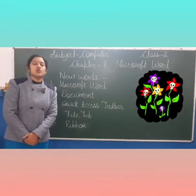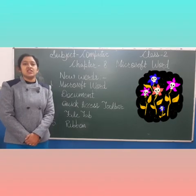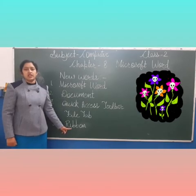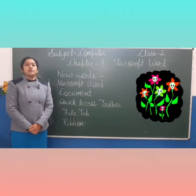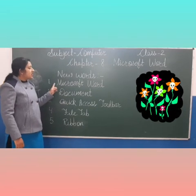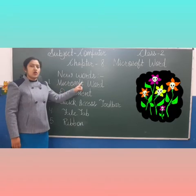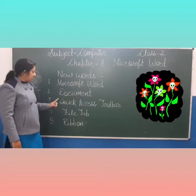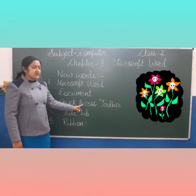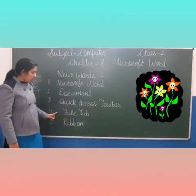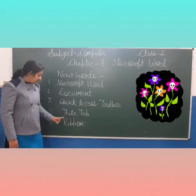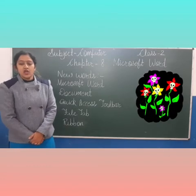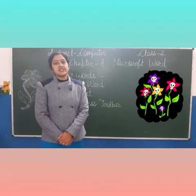Next number 5 — Ribbon — R-I-B-B-O-N. Ribbon kya hota hai batao? Microsoft Word mein kaam karne ke liye hamein jin commands ki zaroorat hoti hai, wo saari commands hamari Ribbon par hoti hain. Now repeat after me: First is Microsoft Word. Second, Document. Third, Quick Access Toolbar. Four, File Tab. Five, Ribbon. Ab batao hum log reading karenge — open your book page 68.